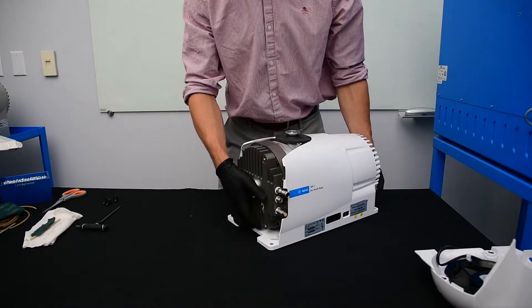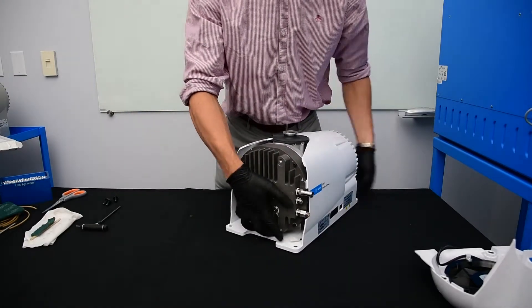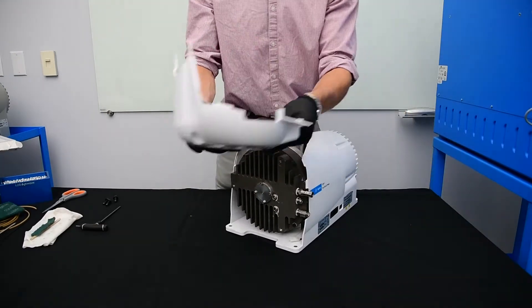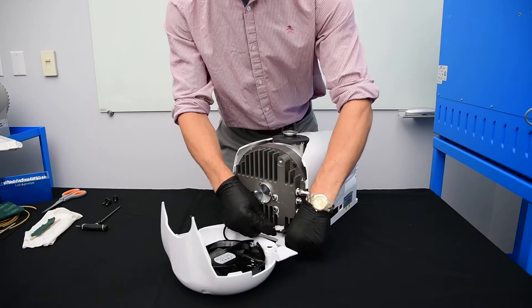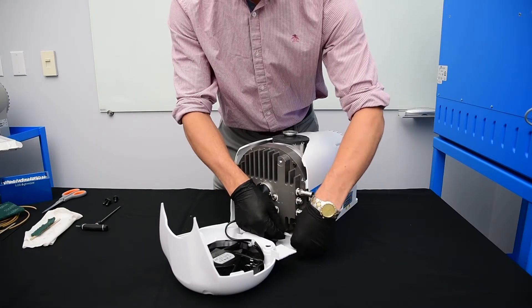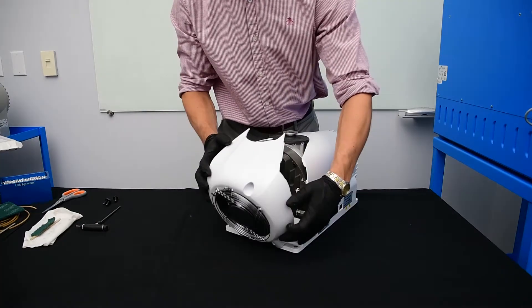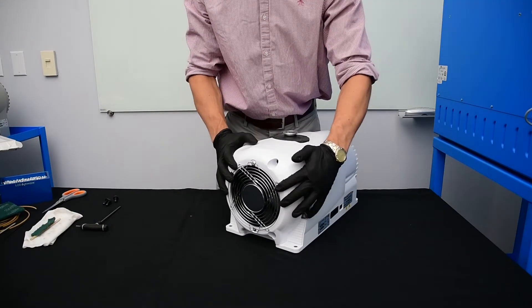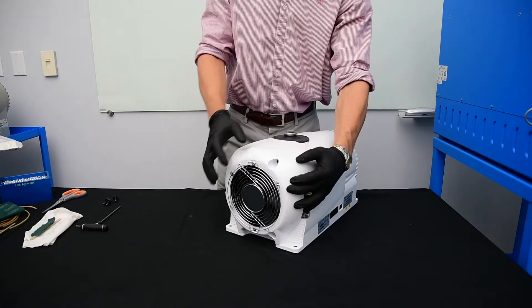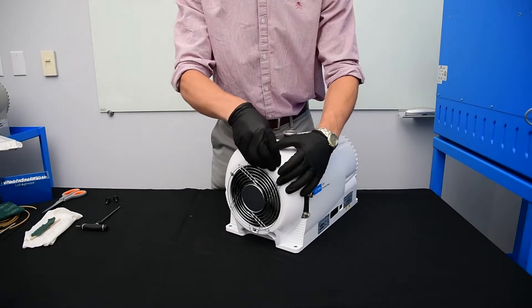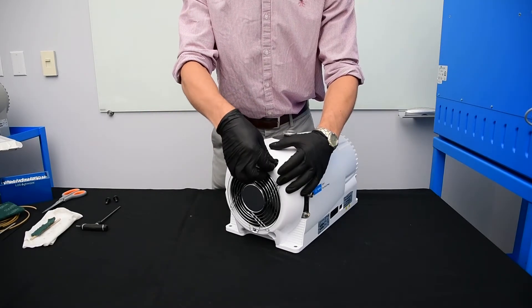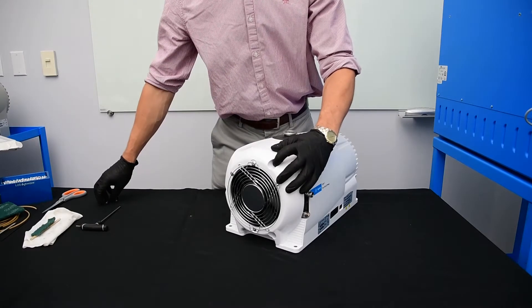Now the outboard housing is installed back on the pump. We're going to get the cowling and the fan back on. Remember to plug the fan back in before installing it. Make sure the cowling slips back in and then grab the three 6mm bolts to put the cowling back on.